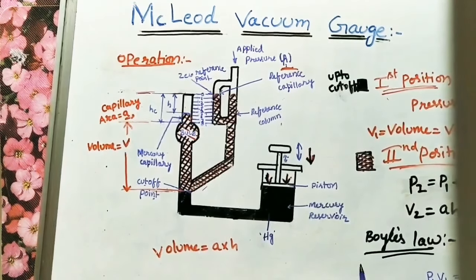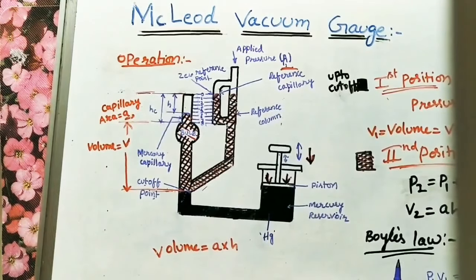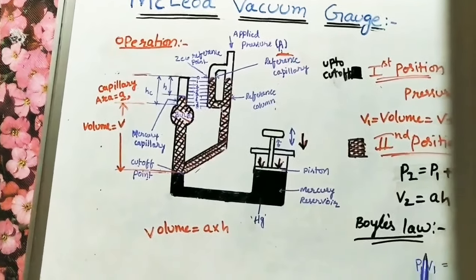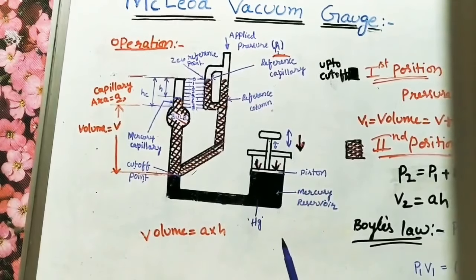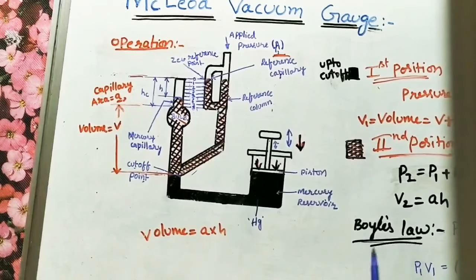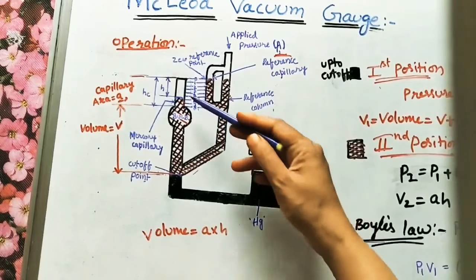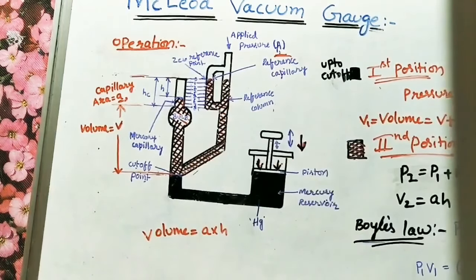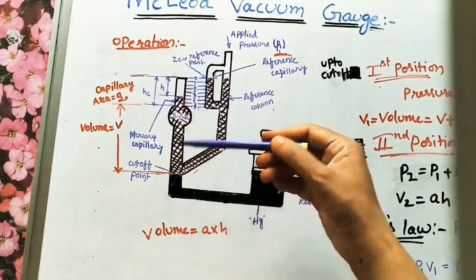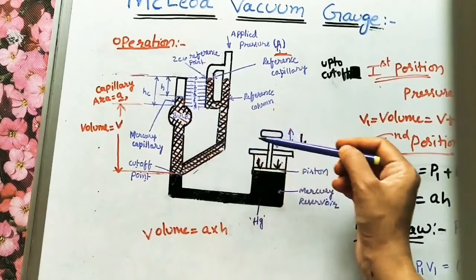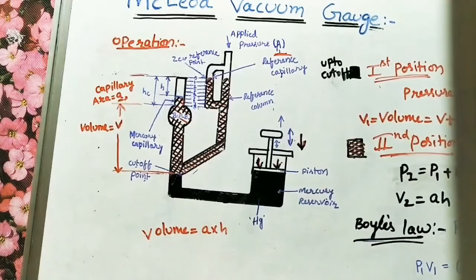Limitations of this gauge: it must obey Boyle's law, which is the main limitation. Boyle's law applies only at ideal conditions, so if conditions are not ideal, it cannot obey this law. Sometimes moisture traps come inside the capillary tubes, causing pressure reading deviations. Also, it cannot give continuous output — after each experiment, we must remove the trapped gas by lifting the plunger upward, which takes a long time. That is the main disadvantage of this instrument.